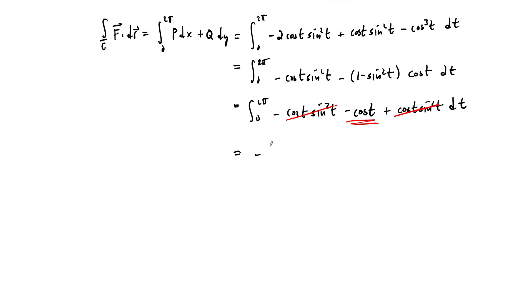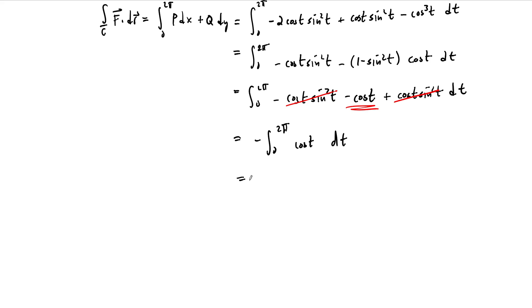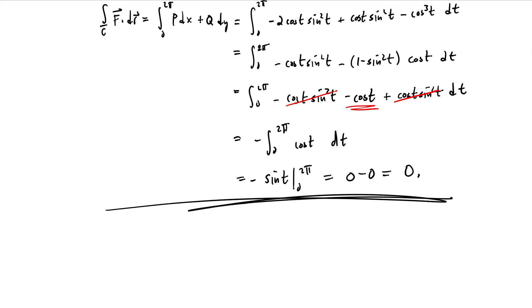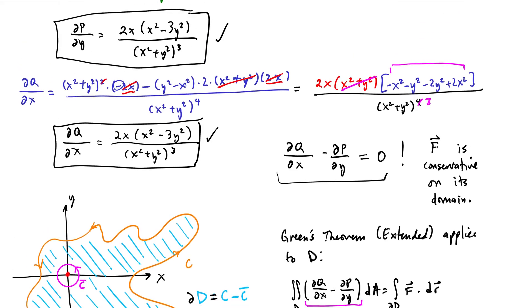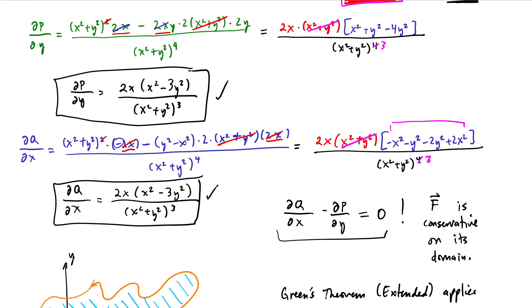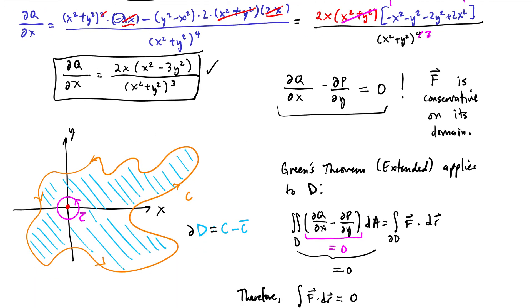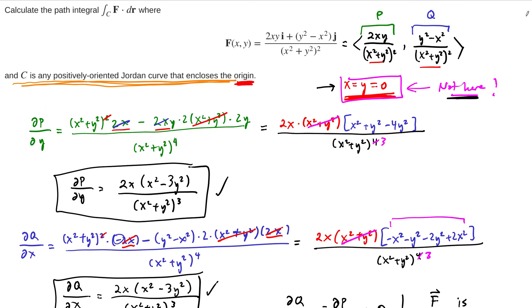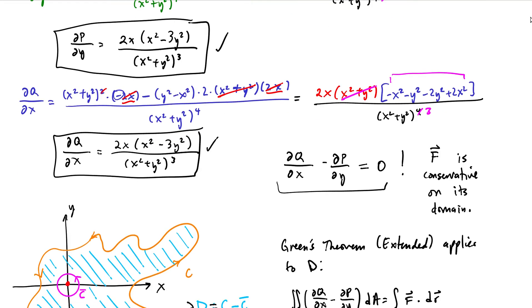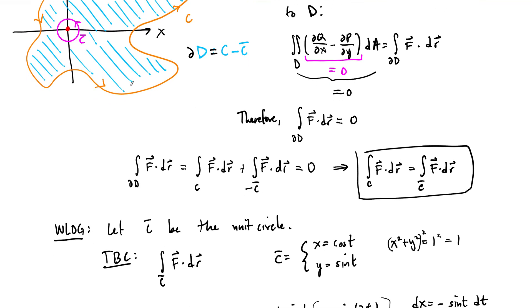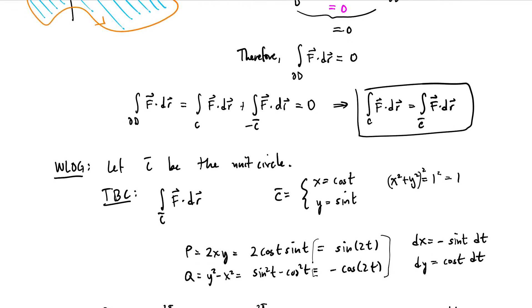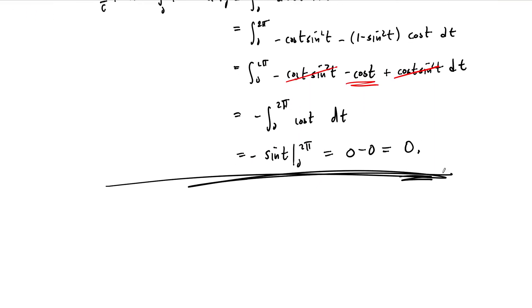So we need to integrate −cos(t) from 0 to 2π, which gives −sin(t) evaluated from 0 to 2π, and that equals 0. Therefore, the path integral around any positively oriented Jordan curve that encloses the origin of F dot dr equals 0. The process was two steps: first showing every such path has the same value as the unit circle, then computing that value to be 0.